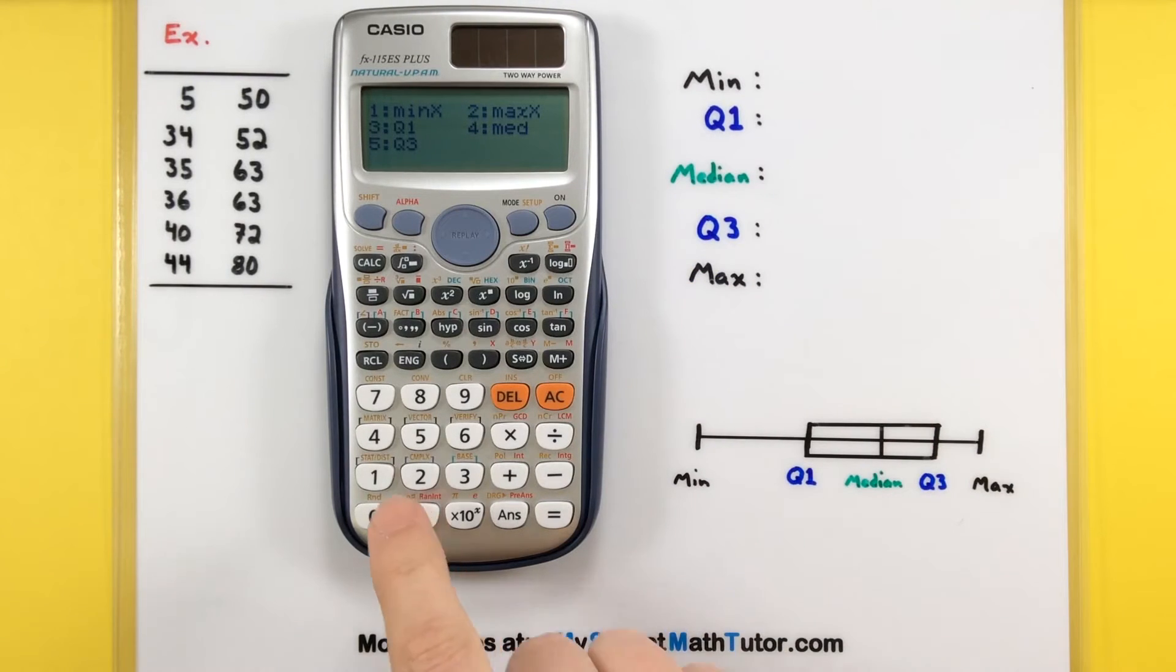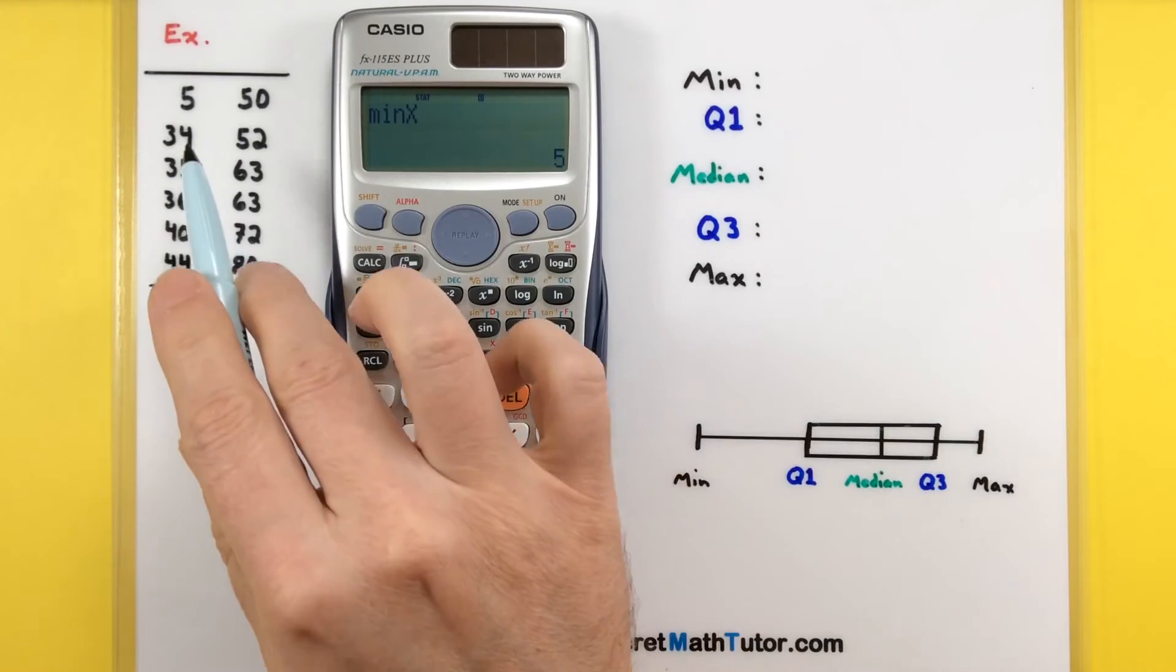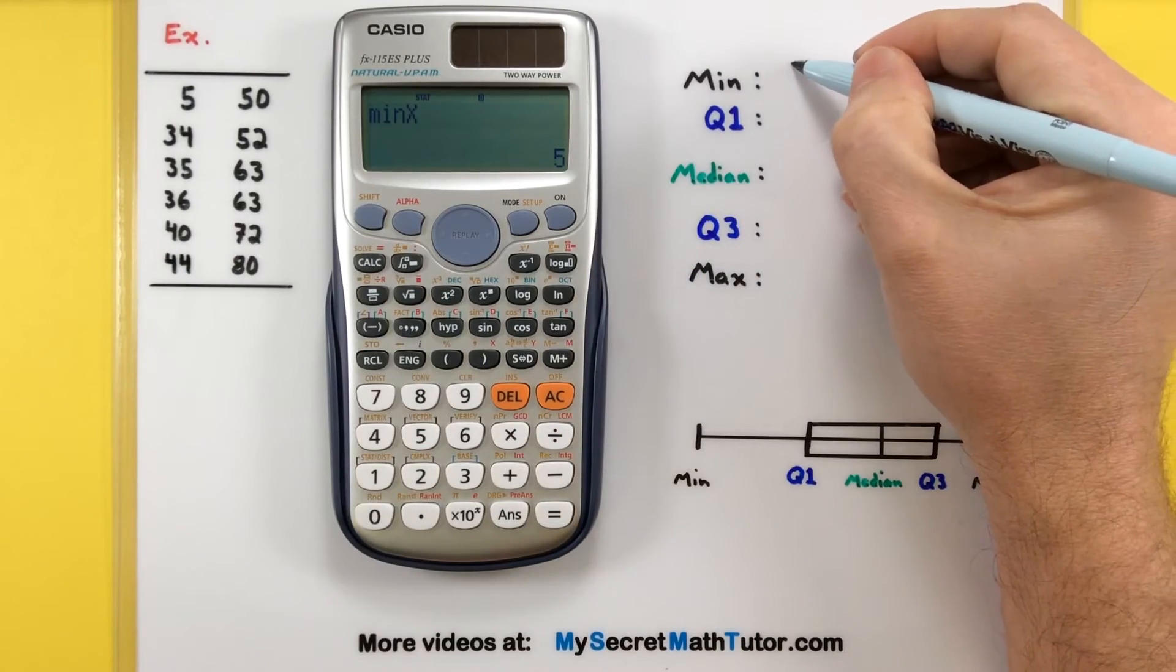So the first one of these we'll grab the minimum value. That's number one. You'll see we've been put back on the main screen. Now I can press enter and it'll give us that minimum value, which is of course the five. So let's go ahead and put that in there.